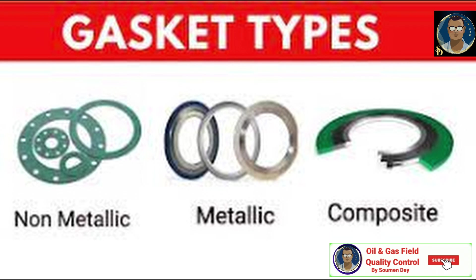Gaskets are required in almost every industry including food processing, petrochemicals, pharmaceuticals, water, and gas. Gasket materials are chosen for their properties and capacity to survive a variety of conditions including mining and deep sea, chemical resistance, alkaline and acid resistance, severe temperatures and pressure. A gasket is an elastomeric component that covers the point where two surfaces meet. They are often made of a range of materials such as rubber, cork, paper, metal, copper, and foam.